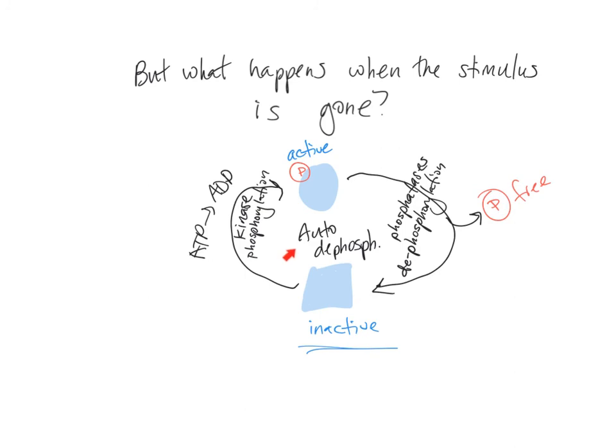Now this autodephosphorylation happens on its own. This is the rate limiting step of the whole system, which means that for some signals, it may take a while for them to turn off as we wait for our active form to go back to our inactive form.